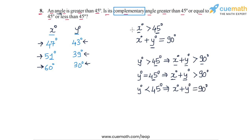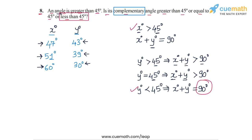The argument is very simple: if x is greater than 45, then y must be less than 45 for the sum to be equal to 90 degrees. So the answer for this question is the complementary angle must be less than 45 degrees. This completes question number 8.